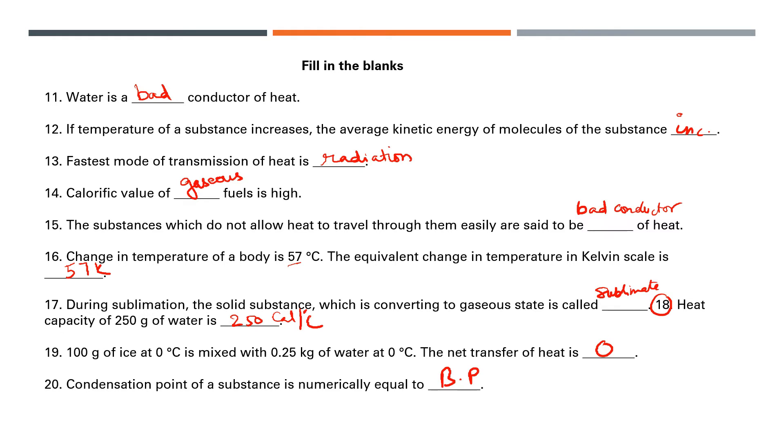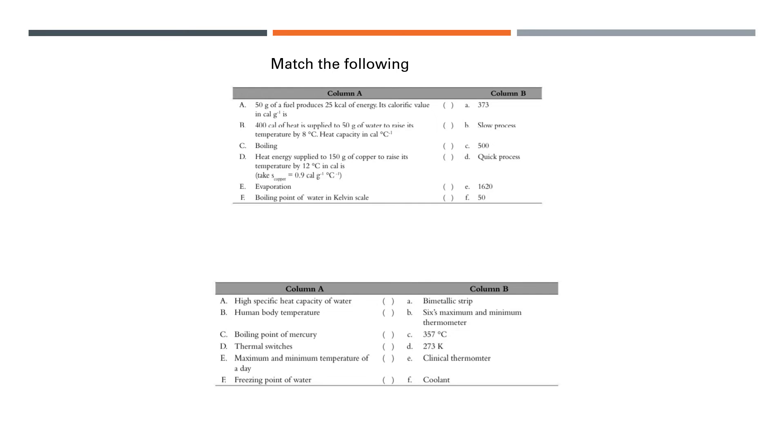Now, match the following. Fifty grams of fuel produces 25 kilocalories of energy. Its calorific value in calories per gram is, the formula is Q by M. You're given 25 kilocalories, that can be written as 25,000 divided by 50, which will come to 500. So the answer will be C.